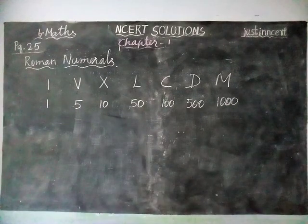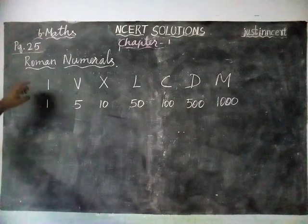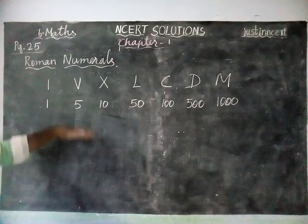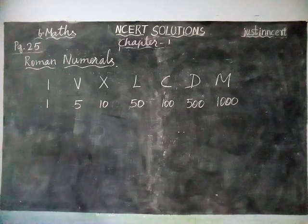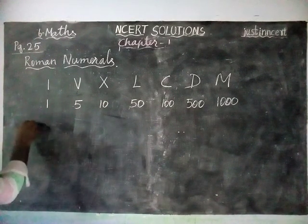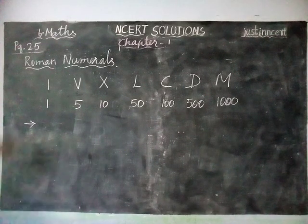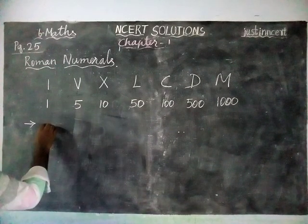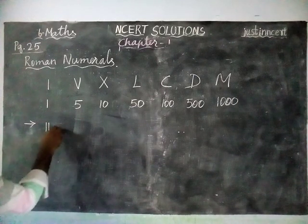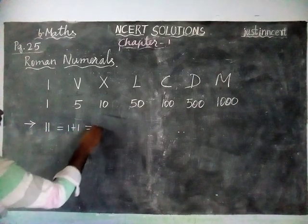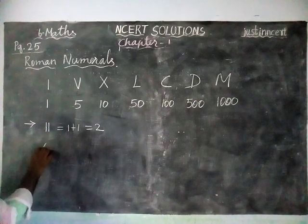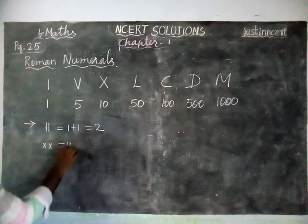And here there are rules — four important rules. By using these seven Roman numerals, we are making any number of numbers. There are conditions. If the numbers are repeated continuously, the value will be added. For example, if we write I, I, the value is equal to 1 plus 1 is equal to 2. And next, if we write X, X, the value of X, X is equal to 10 plus 10 is equal to 20.